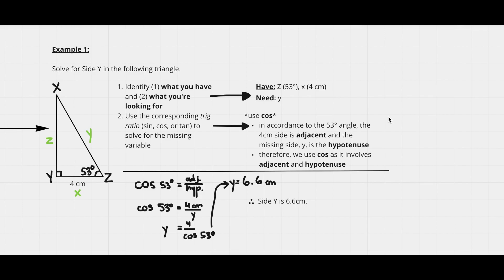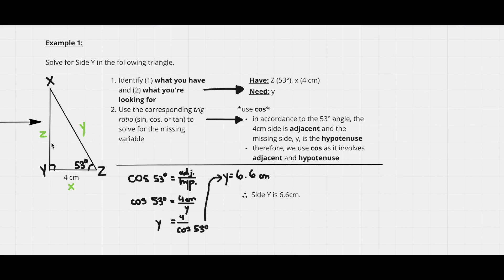Here's our first example: solve for side y. Side y is represented by the lowercase y, since capital letters represent angles and lowercase letters represent the side opposite that angle. We're given a 53-degree angle at Z, side x is 4 centimeters, and angle Y is 90 degrees — confirming this is a right triangle.